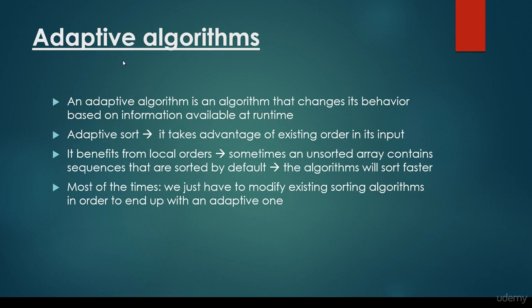What does it mean, adaptive algorithms? An adaptive algorithm is an algorithm that changes its behavior based on local information available at runtime.